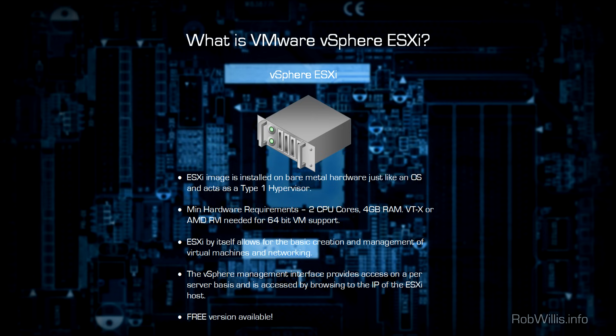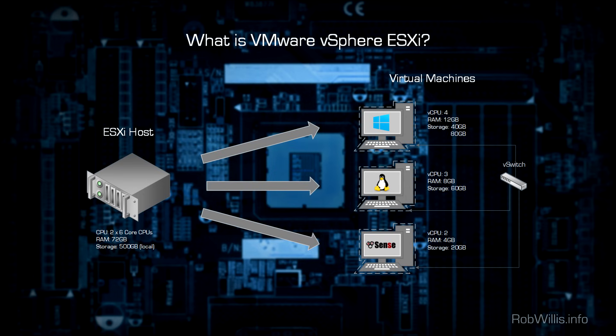Now let's talk about a typical ESXi server layout. On the left-hand side you're going to see an ESXi host representing some sort of physical hardware — that could be a Dell PowerEdge server, an HP, a blade server, or a white box you have laying around. As long as it boots ESXi you should be good to go. That's what I did with my first ESXi machine — I had an old gaming box, bought a new motherboard, and managed to boot ESXi on it.